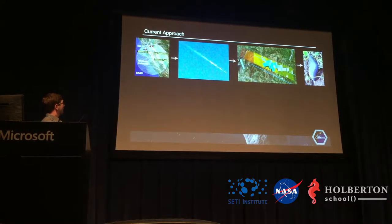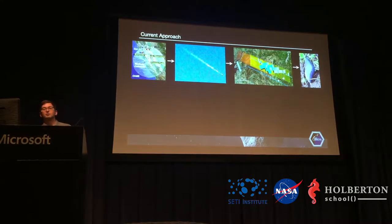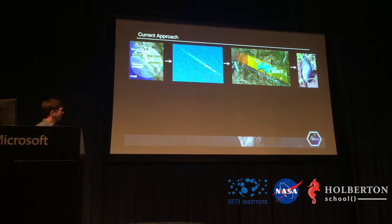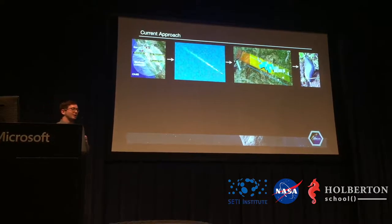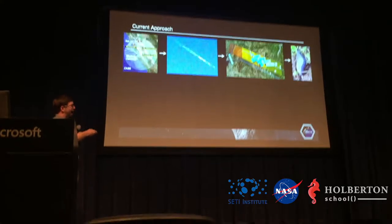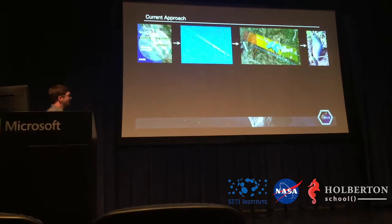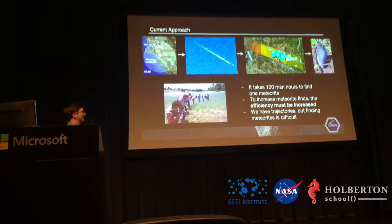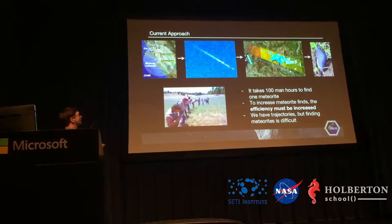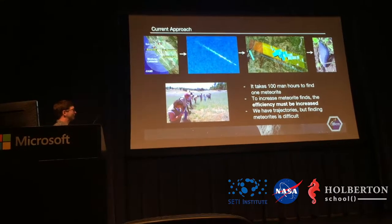Hundreds of samples and trajectories are needed to statistically say what type of objects come from which asteroid family. The current approach is to develop a network of cameras — that's what Peter set up — and take images of actual trajectories. If you image the actual entry of a meteor into the atmosphere, you'll have an estimate of what the strewn field would look like, and then you can go in and find the physical sample.